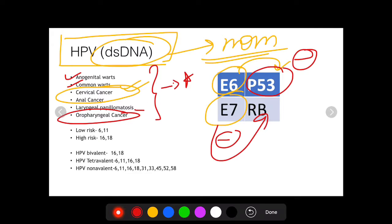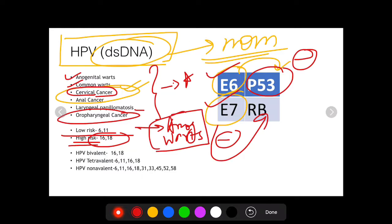Now HPV has multiple serotypes. Certain serotypes are called high-risk serotypes as far as pathogenesis of cervical cancer is concerned because they express E6 and E7 proteins in much higher amounts and hence have a much greater tendency to cause cancer. These high-risk HPV serotypes are 16 and 18, while lower risk serotypes are 6 and 11. They more commonly cause anogenital and common warts as compared to cervical cancer, while 16 and 18 are more implicated in cervical cancer.